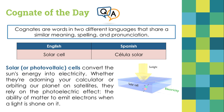Solar cells convert the sun's energy into electricity. Whether they are powering your calculator — you may have seen a calculator that has a small solar panel at the very top — or orbiting our planet on satellites, they rely on the photoelectric effect: the ability of matter to emit electrons when light is shown on them. As you can see here, this is our solar cell, usually called solar panels when we have many of them together.